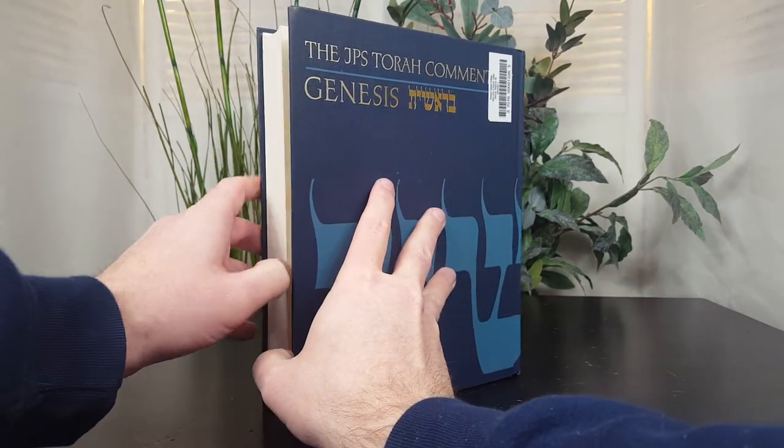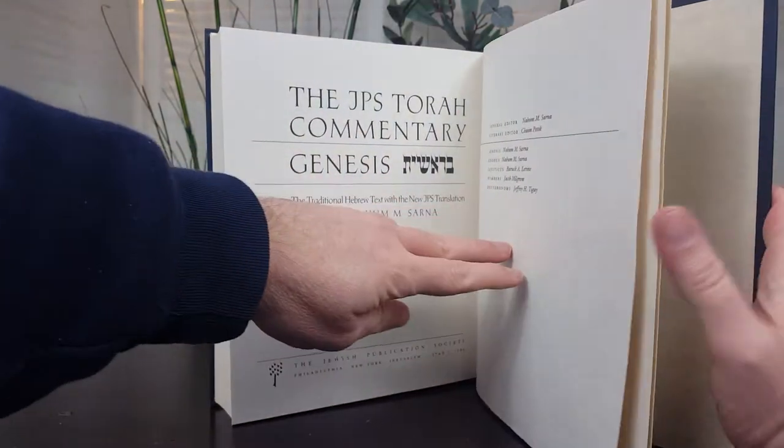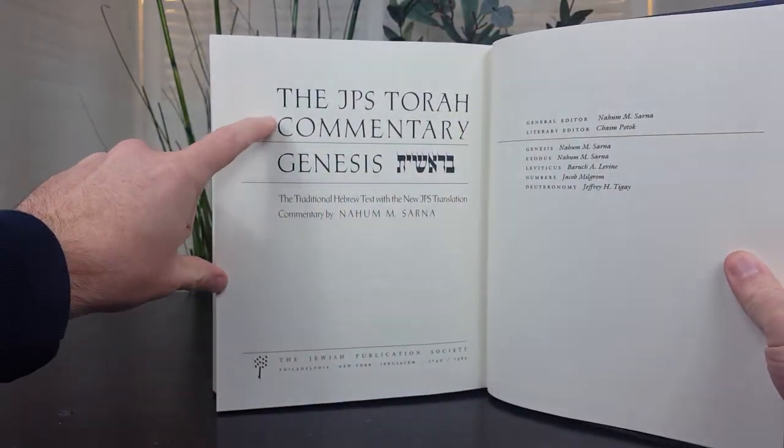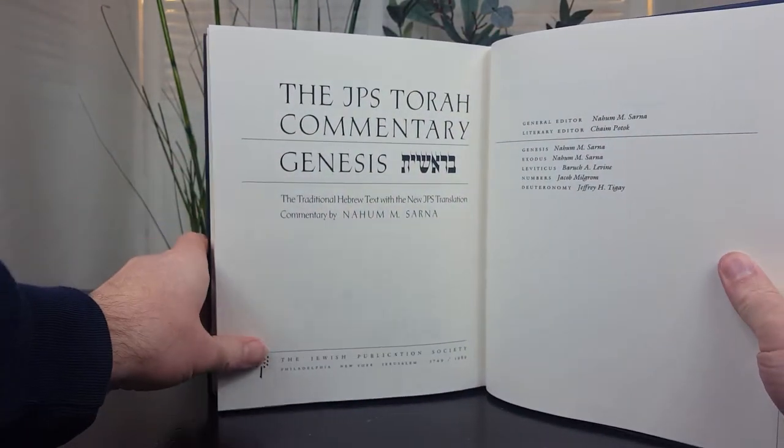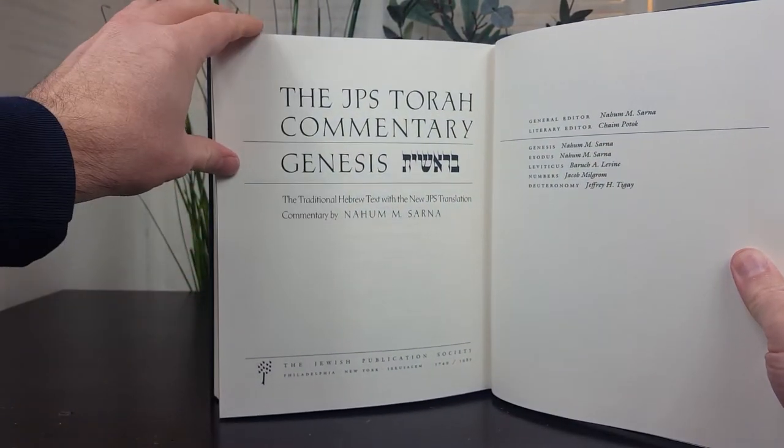We open the book this way, we come to the title page: JPS Torah Commentary Genesis, written by Nahum Sarna.